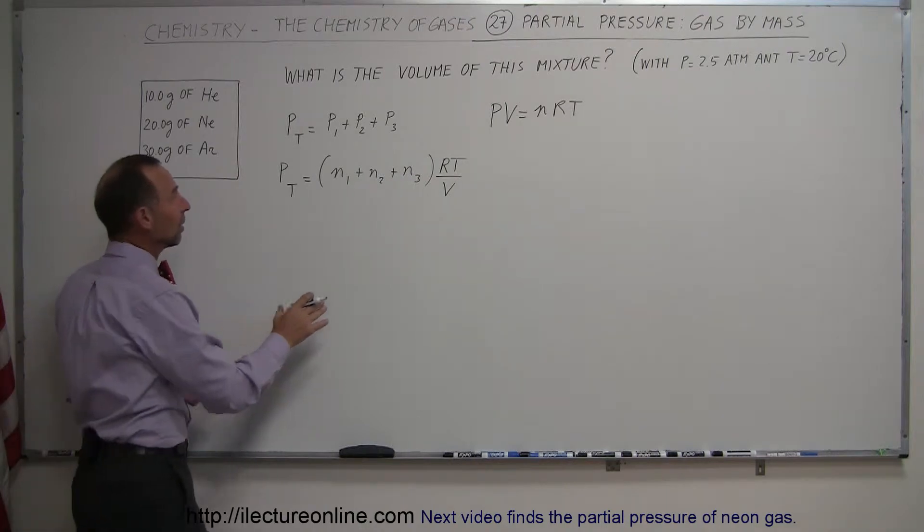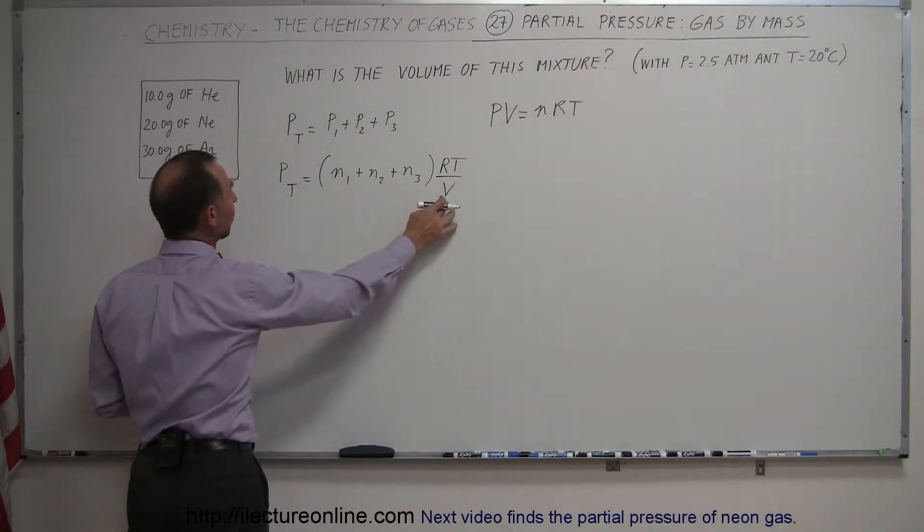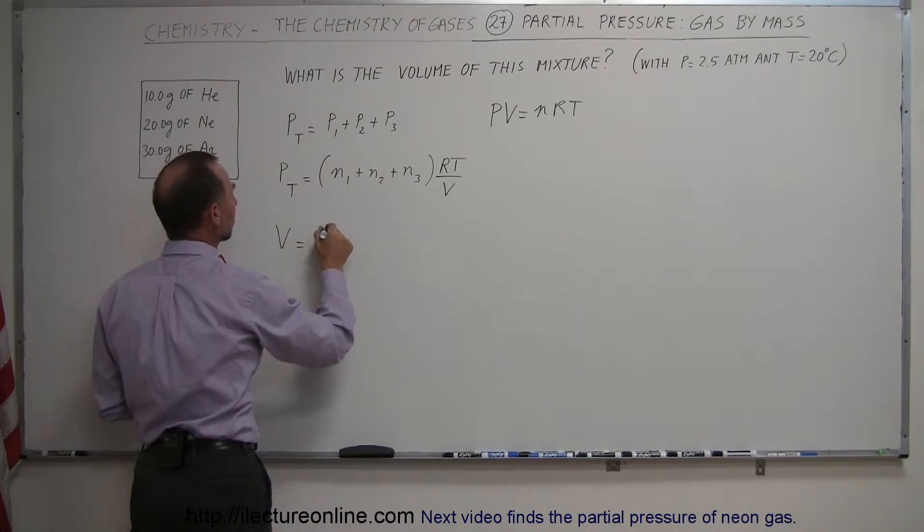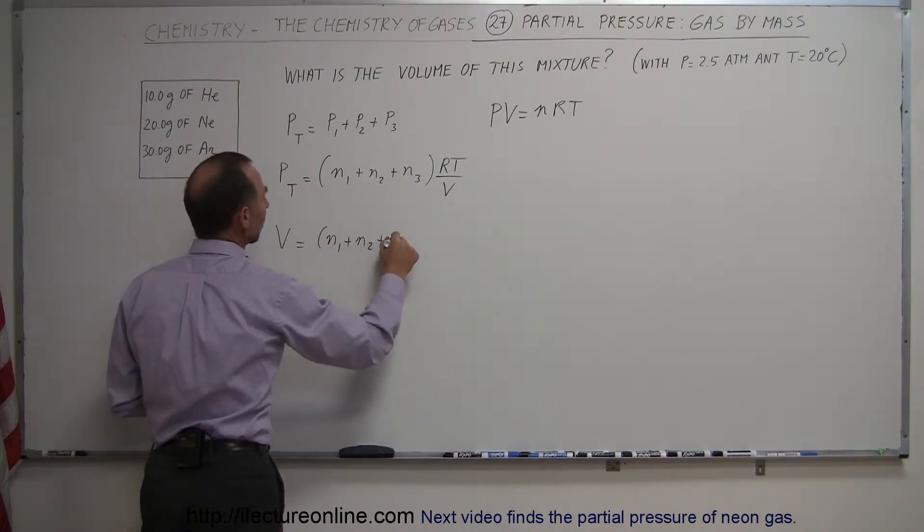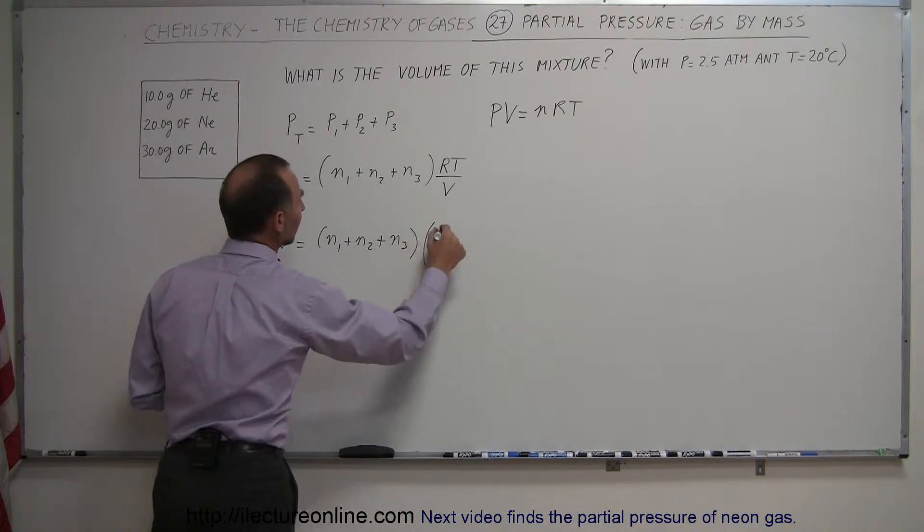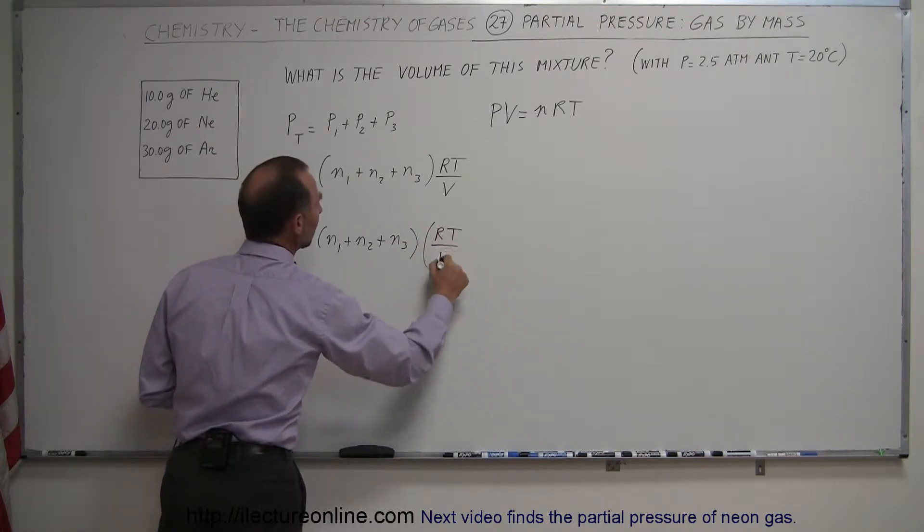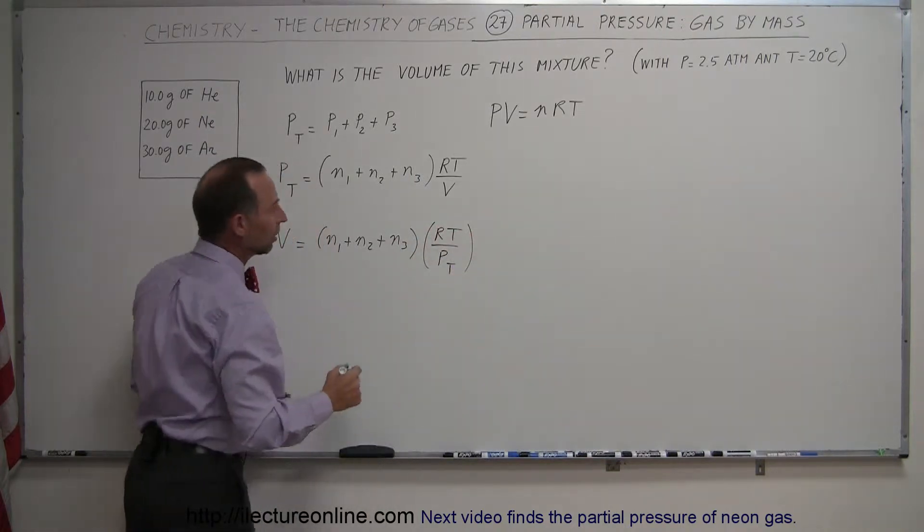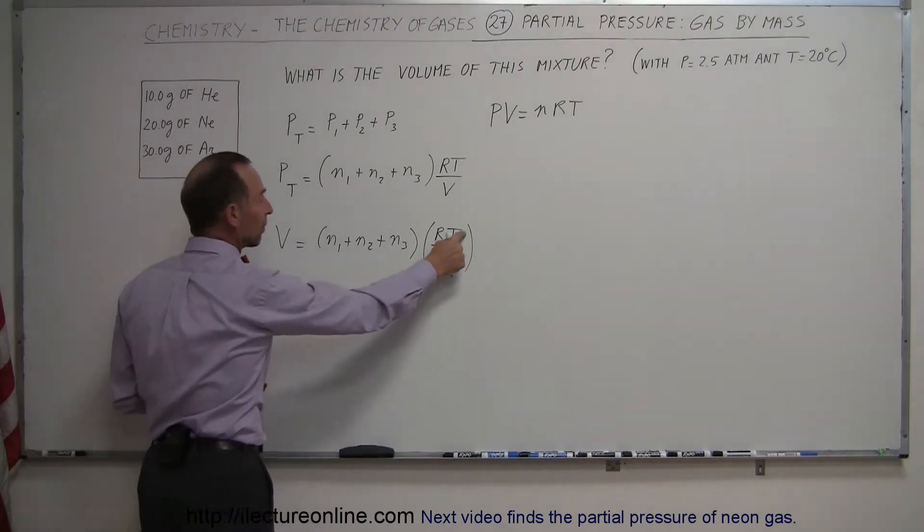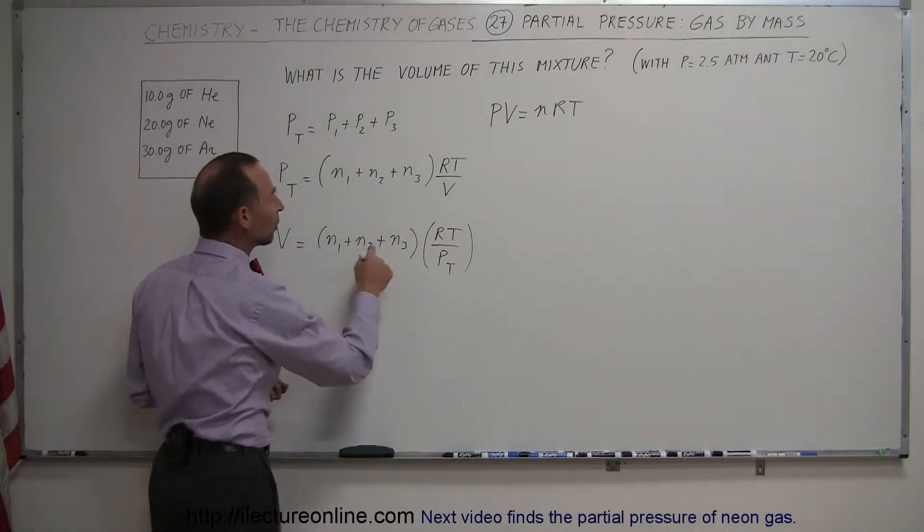We can take this equation, put the V over there, put the P over here, and write that the volume of this gas equals N1 plus N2 plus N3 times RT over the total pressure. All we have to do is plug in the temperature, the pressure, and find the number of moles of each gas.